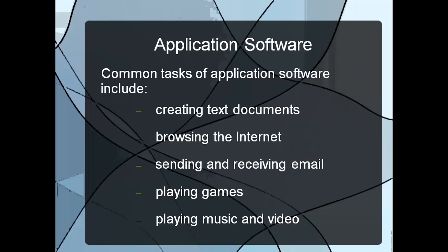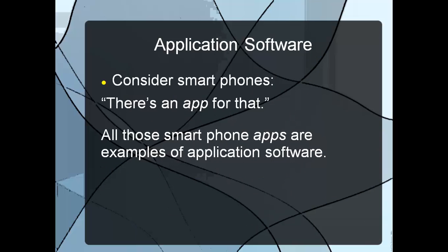Specifically, these tasks include creating text documents, browsing the internet, sending and receiving email, playing games, playing music, and playing videos. Most programs you'll use on a computer fall into this category. Consider smartphones — there's an app for that. All those apps on your phone or iPad are examples of application software: programs allowing you to get a specific task done.